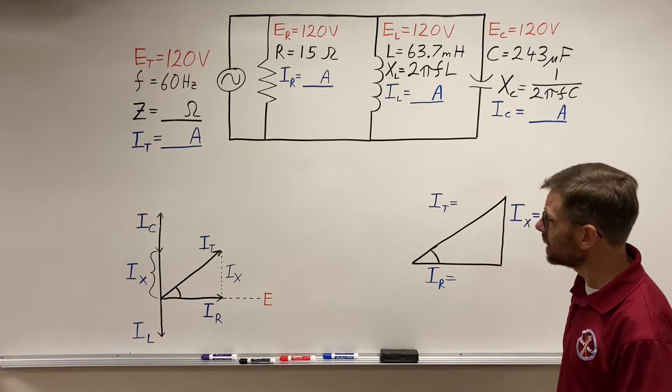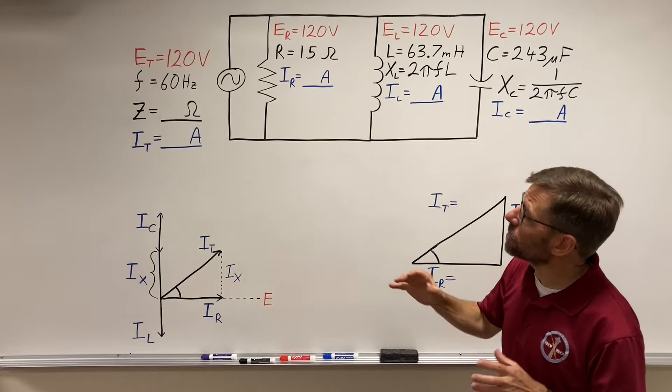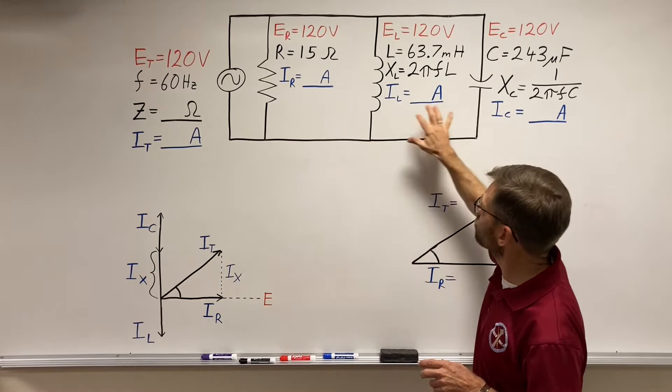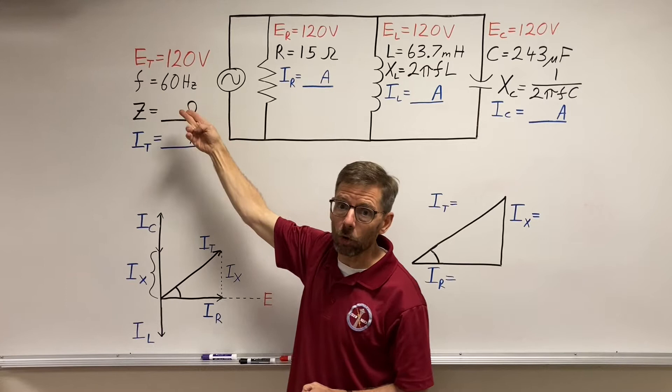There is a formula method, a two-step formula method. We'll go over it in class. But in this video, I'm just going to use the method to find total impedance by finding my branch currents, adding them vectorially for a total current, that then I can use my source voltage and my amperage to get my ohms.